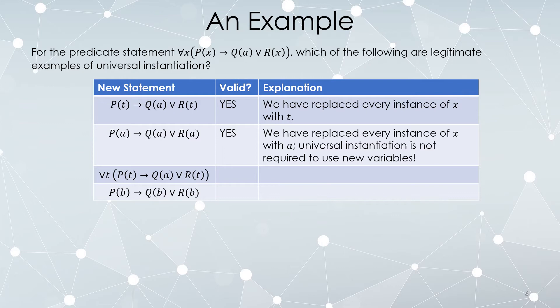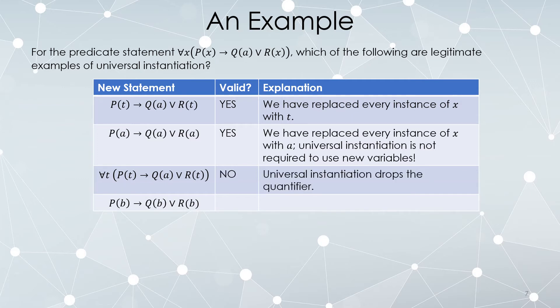We're replacing every instance of x with anything we want, even if it's the same that was being used here. Universal instantiation does not require you to use new variables. If a statement is always true, then it's true even if you're using something that was already used somewhere else.